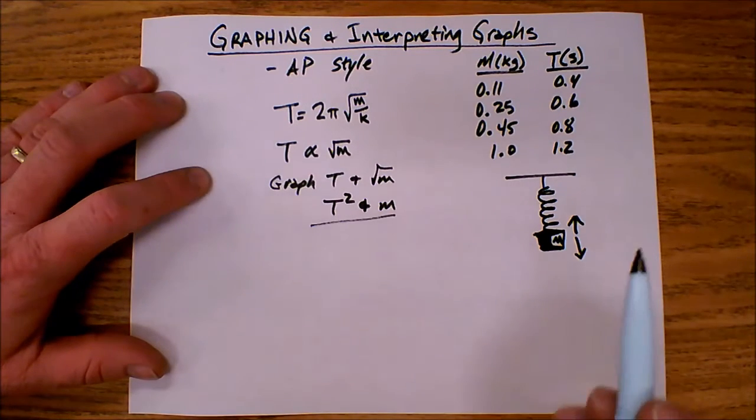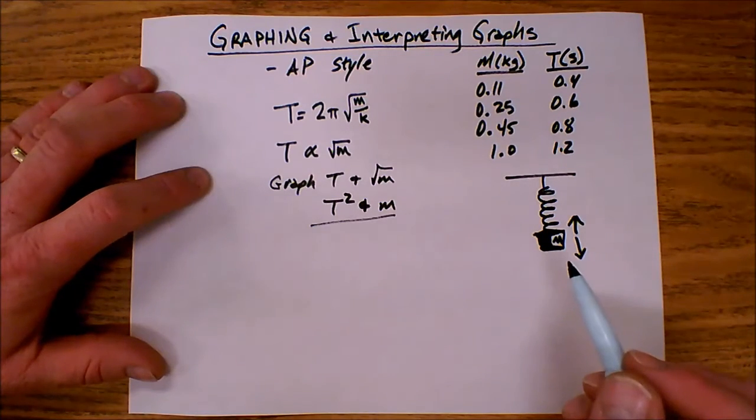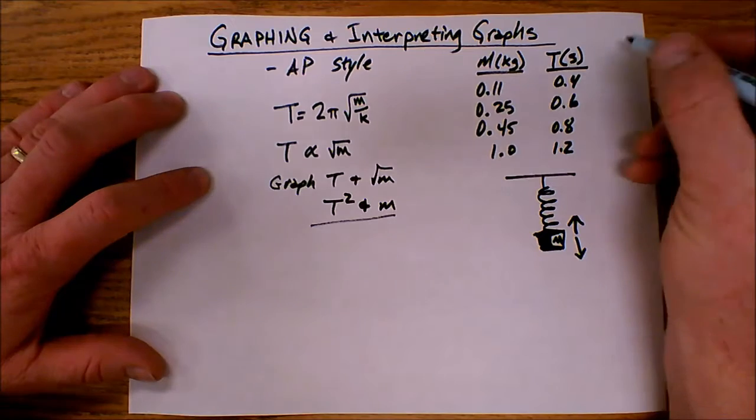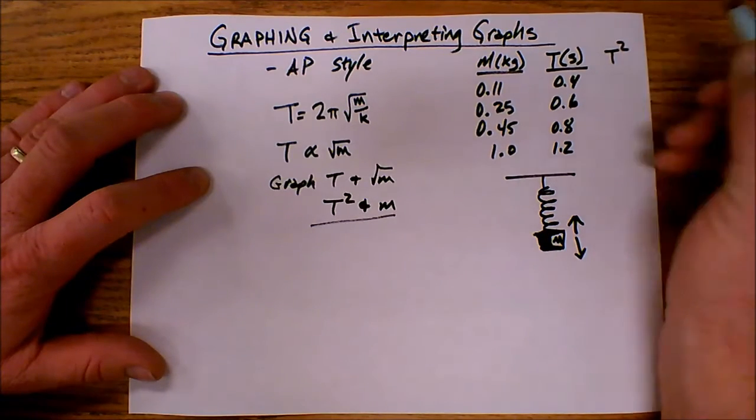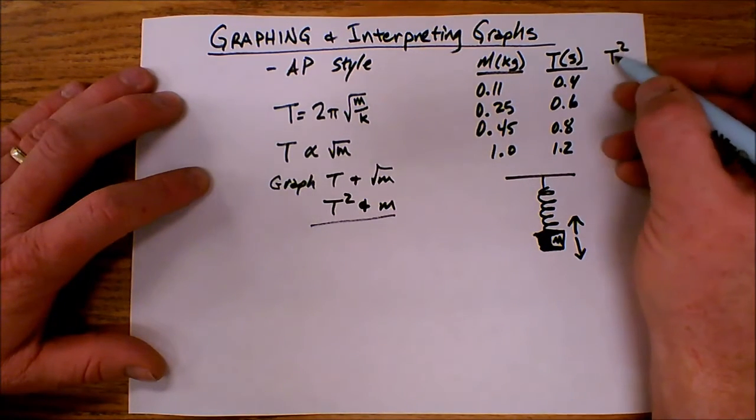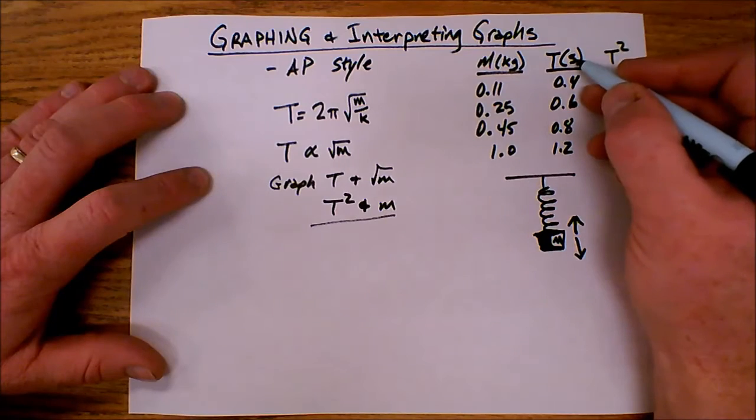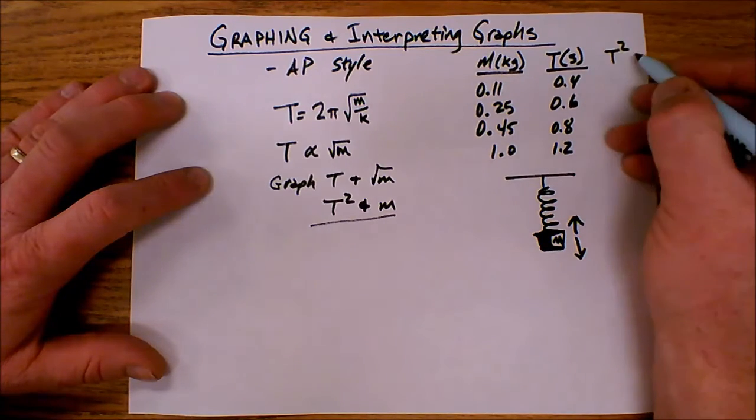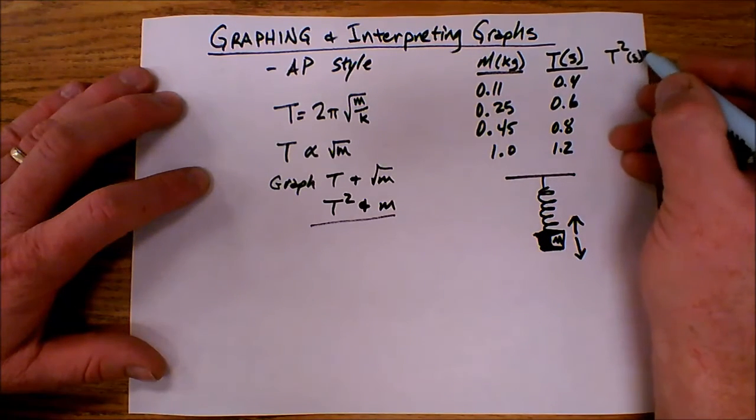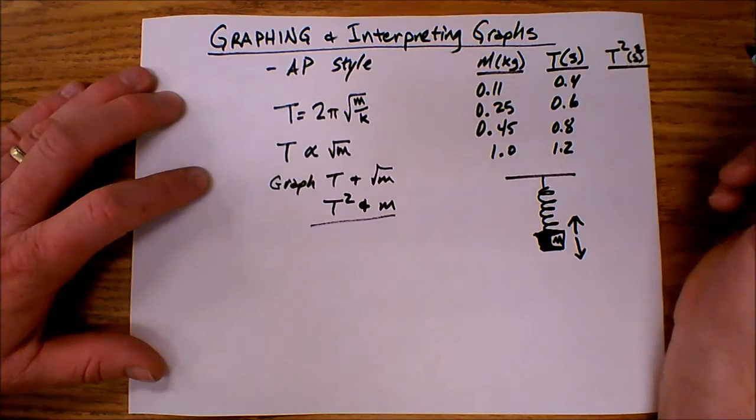So in order to graph T squared and m, I need to create a new column of data. And this new column of data, I'm going to call it T squared. Very creative. The units of T squared will be whatever I do to the variable, I do the same thing to the units. So I'm squaring the T. Therefore, I'm going to square the s.